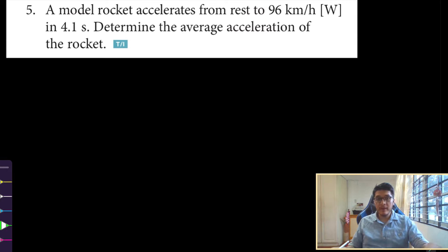Alright, let's look at question number 5. And make sure you put a like or hit subscribe. So number 5. A model rocket accelerates from west to 96 kilometers per hour west in 4.1 seconds. Determine the average acceleration of the rocket. So here we're asked to find the average acceleration, which is the change in the velocity over the change in time, vector quantity.